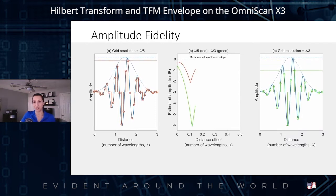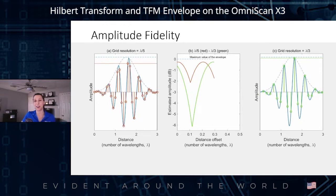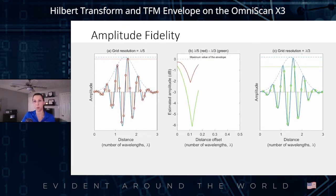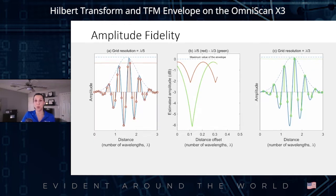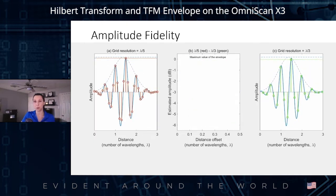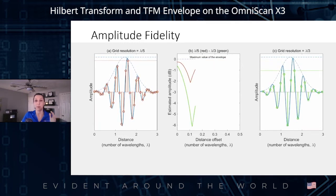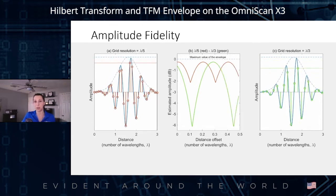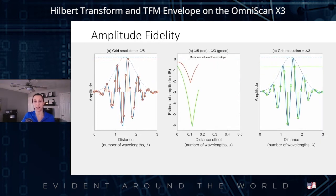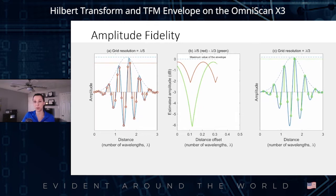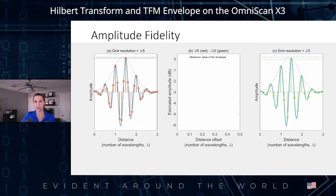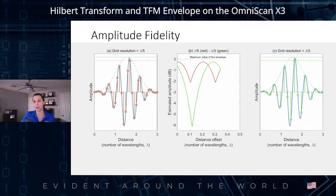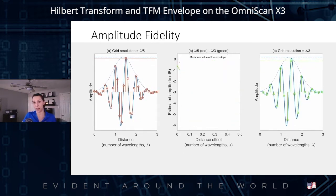Let's talk about amplitude fidelity. If we are looking at the RF signal sampling at five samples per wavelength in red on the left, or at three samples per wavelength in green on the right, we can see that in both cases we never meet the actual true peak of the signal, or its maximum value, represented by the blue horizontal dotted line. With the image in the middle, we can understand why codes are requesting a variation no greater than 2 dB for amplitude fidelity at lambda divided by five, as we could lose as much as 6 dB without an envelope as we lower the sampling rate below five.